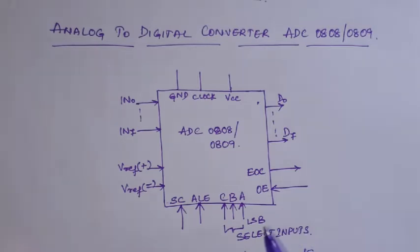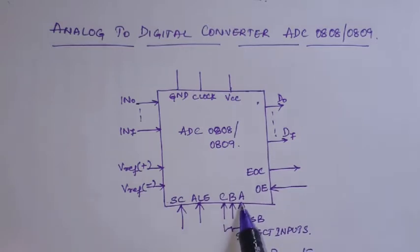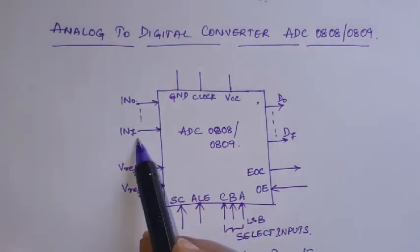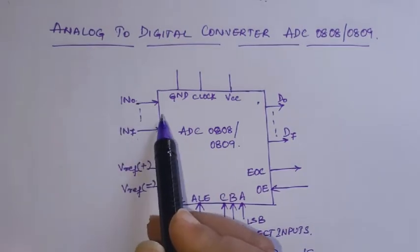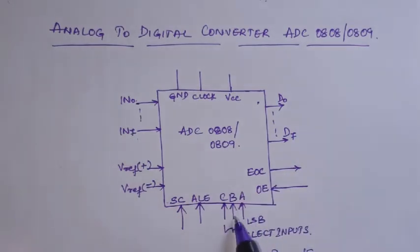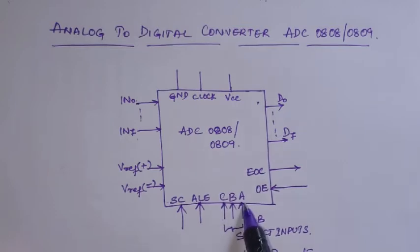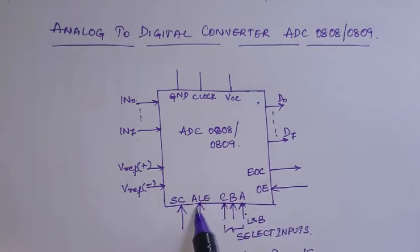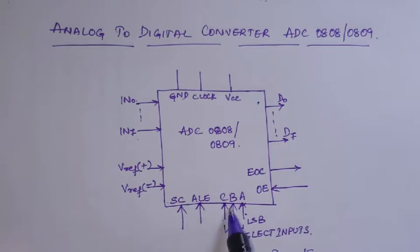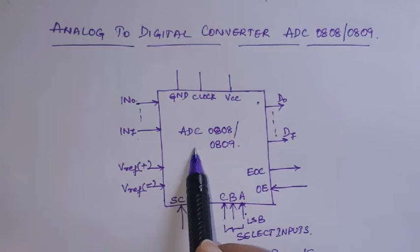Out of these 8 channels, only one will be selected at a time and converted to digital. Which one is selected depends on the select inputs — 3 bits A, B, C. For example, if I am connecting a device at input channel 2 (IN2), I give 0-1-0, which is binary 2. That particular channel will then be selected. To latch that address, ALE is required — the address you are placing on A, B, C is latched by activating the ALE pin on the ADC chip so that particular channel is taken for conversion.